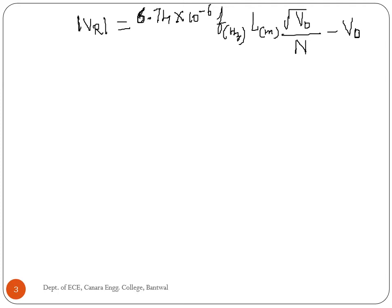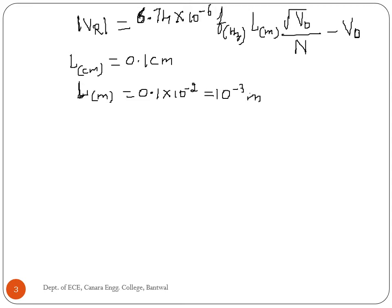Frequency is 10 gigahertz. Length is given in centimeters; as per the expression we have to convert to meters. 0.1 centimeter equals 0.1 × 10⁻² which is equal to 10⁻³ meter. So N is equal to 1.75, and V0 is 300 volts.